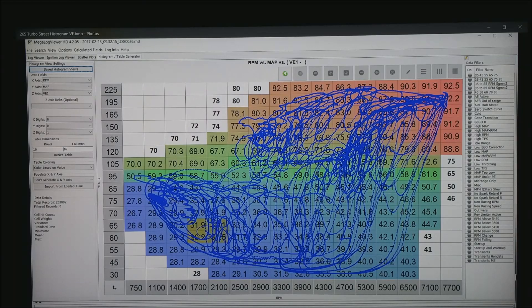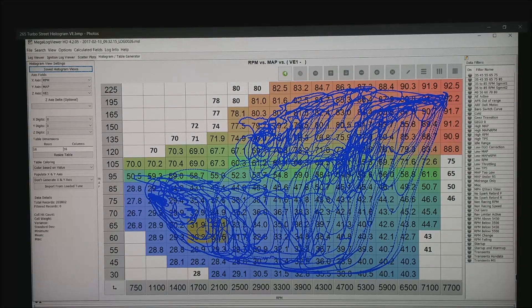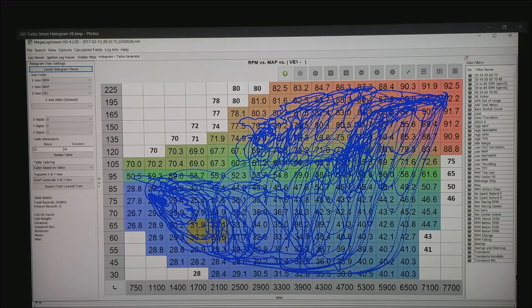Now if we look at that same motor in histogram view where the color now is volumetric efficiency or VE1 in the Megasquirt world, you can see where again he is traveling through the map.